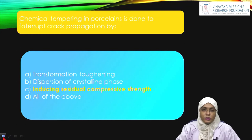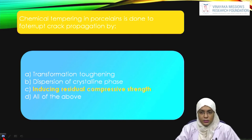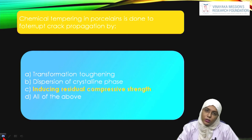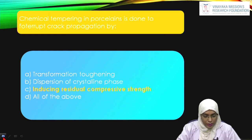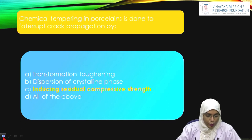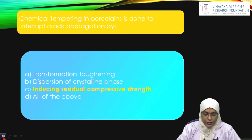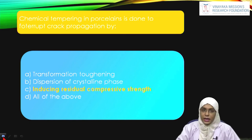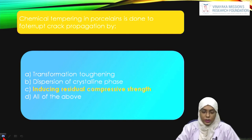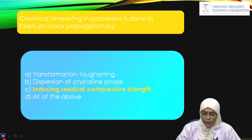Now let us see some important questions asked in NEET and other national PG entrance examinations on this topic. One important question is: chemical tempering in porcelains is done to interrupt crack propagation by — transformation toughening, dispersion of crystalline phase, inducing residual compressive strength, or all of the above? The answer is inducing residual compressive strength, because chemical tempering replaces sodium ions with potassium ions, increasing residual compressive strength.